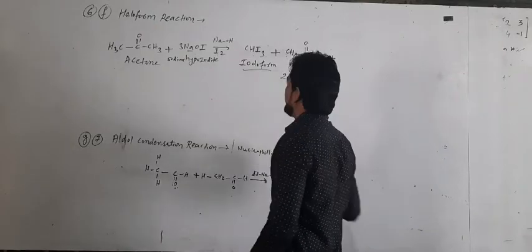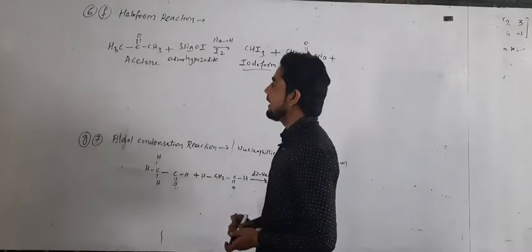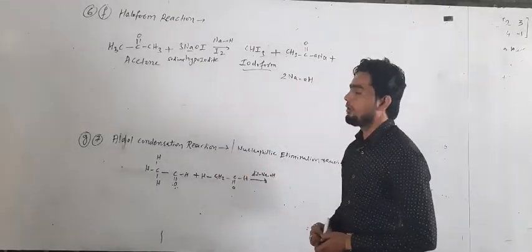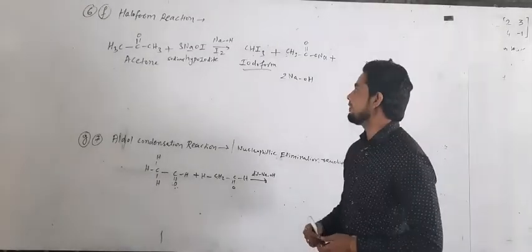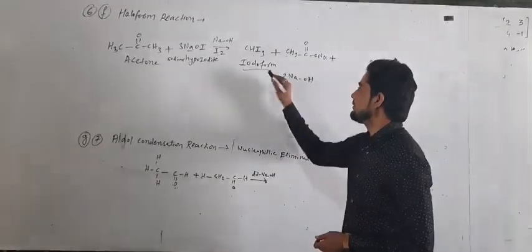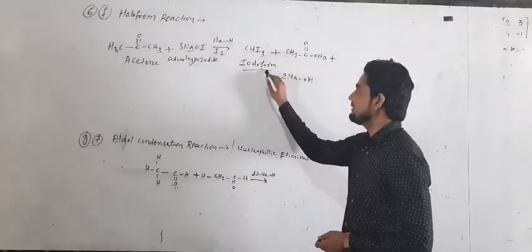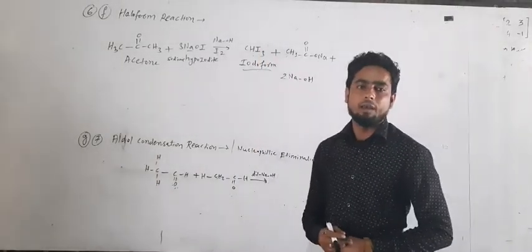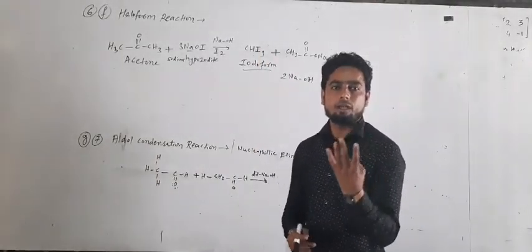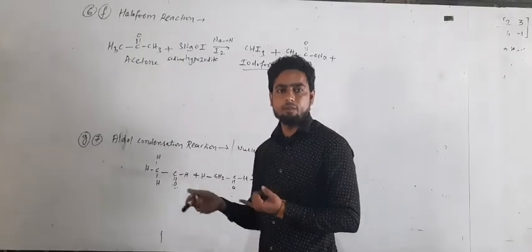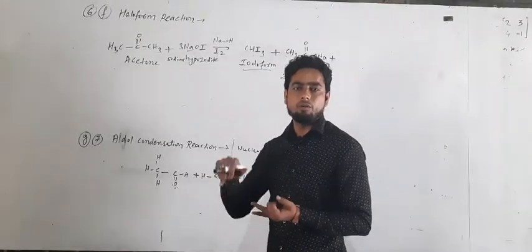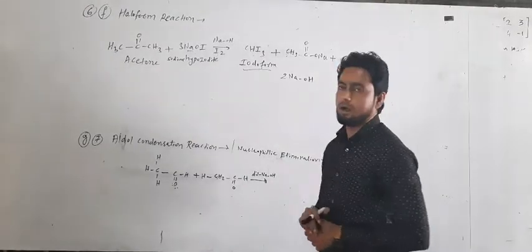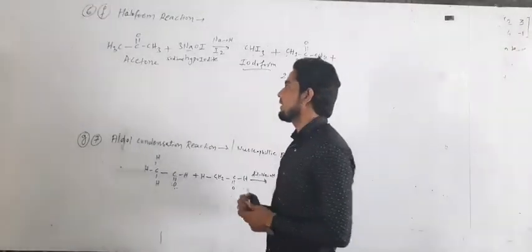So in this way, when an aldehyde or ketone reacts with sodium hypoiodide, it forms a yellow color solution of iodoform. This reaction is called the haloform reaction — formation of haloform. Halo means halogen, which has 4 types: fluorine (fluoroform), Cl (chloroform), Br (bromoform), and I (iodoform). It is a very important reaction.